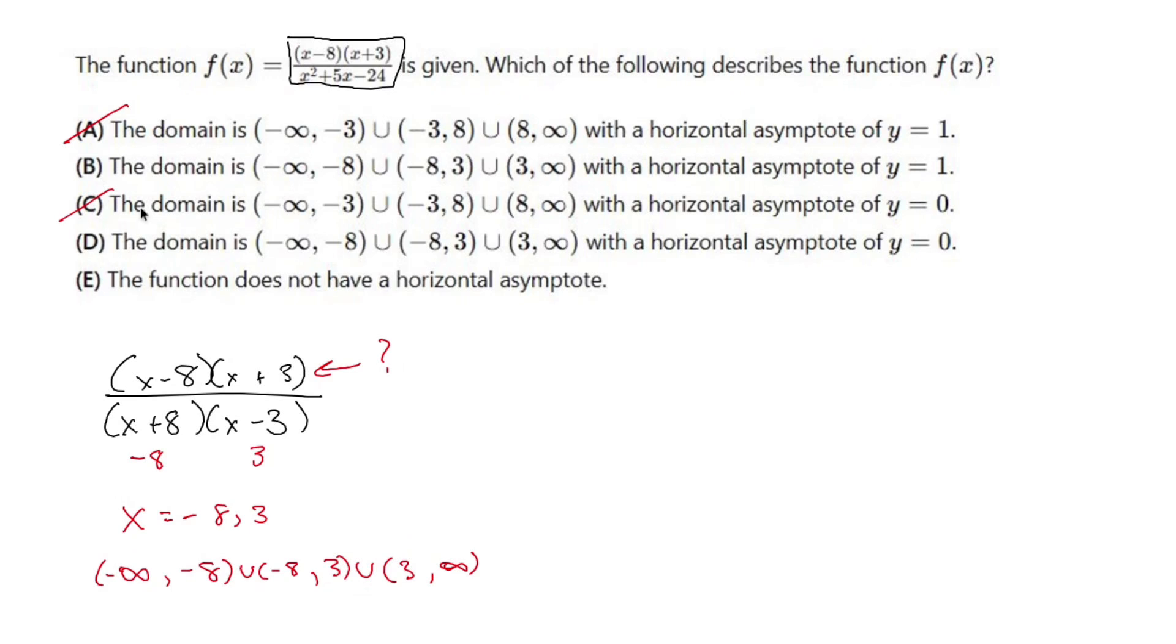So I'm going to do that by rewriting this guy and foiling out the top. So if I foil out the top, I get x squared plus 3x minus 8x is minus 5x minus 24. And that's all over x squared plus 5x minus 24.